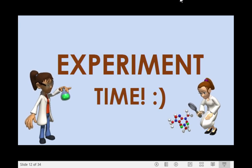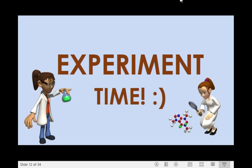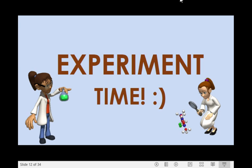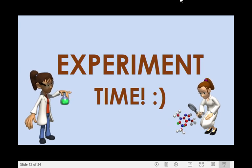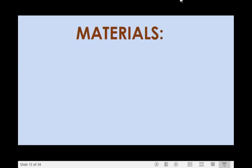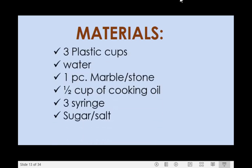Now, in order for you to understand properties of solids, liquids, and gases, try to perform the following experiments. You need to have the following materials: three plastic cups, water, one piece marble or stone, one half cup of cooking oil, syringe, sugar, and salt.